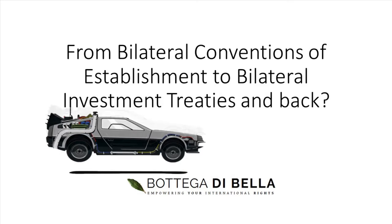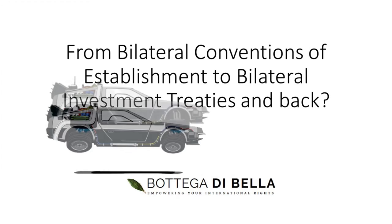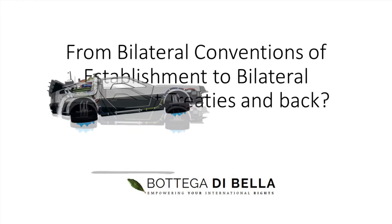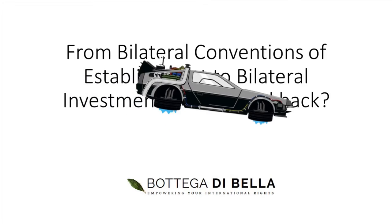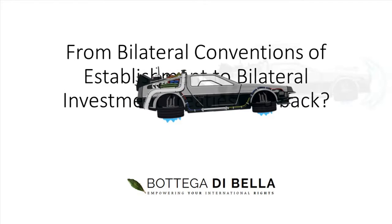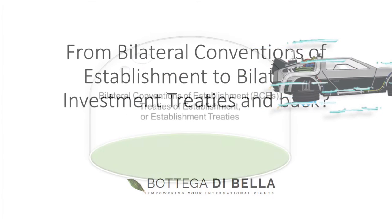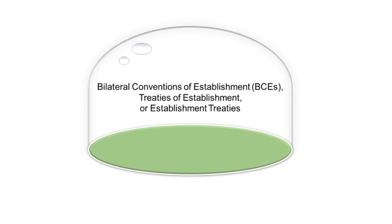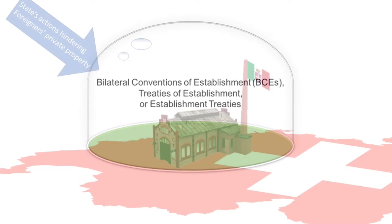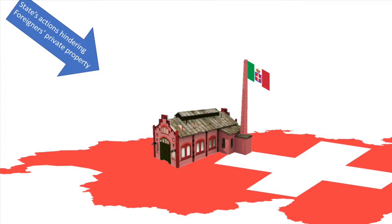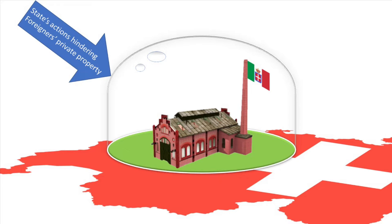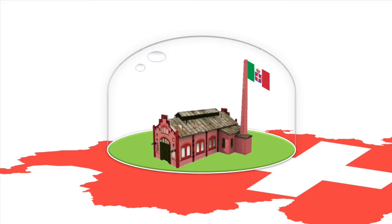From Bilateral Conventions of Establishment to Bilateral Investment Treaties and back. Bilateral Conventions of Establishment, or BCEs, sometimes referred to as Treaties of Establishment or Establishment Treaties, are international instruments concluded between the 19th and 20th centuries to establish and safeguard the rights of foreign nationals with respect to their property and business undertakings.